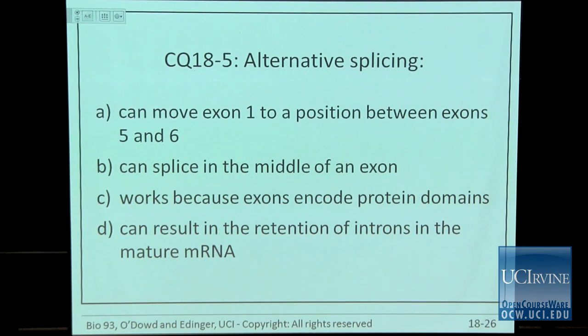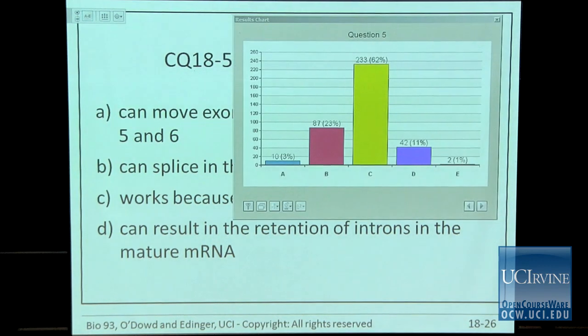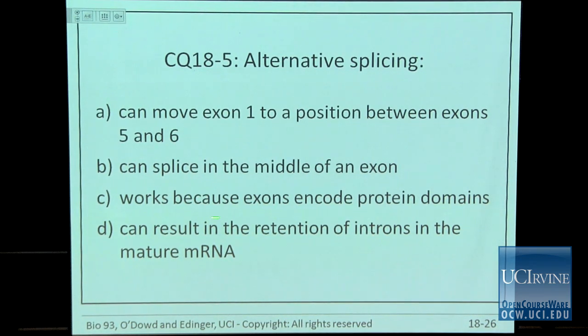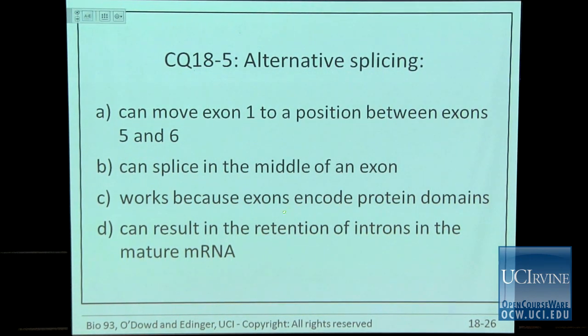Most of you got this one right — it is C: alternative splicing works because exons encode protein domains. You cannot move exons around, only keep or exclude them. You cannot splice in the middle of an exon, and intron retention in a mature mRNA does not happen. We're going to go over the last two slides on Friday since we're running late — see you then.